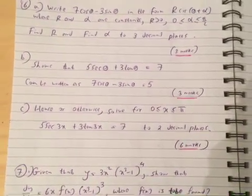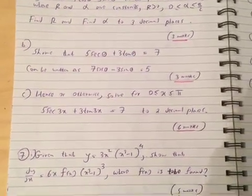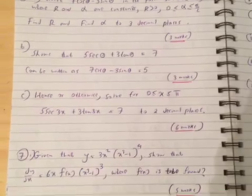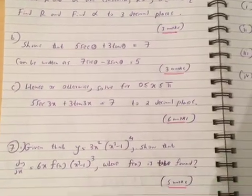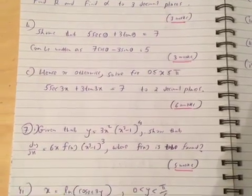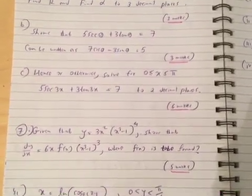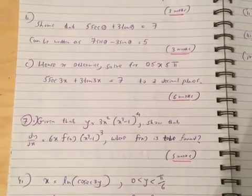Part b: Show that 5 sec theta plus 3 tan theta equals 7 can be written as 7 cos theta minus 3 sin theta equals 5. Hence or otherwise, solve for x between 0 and pi, 5 sec 3x plus 3 tan 3x equal to 7 to 2 decimal places.